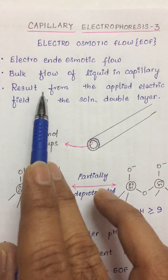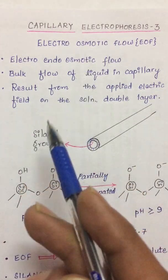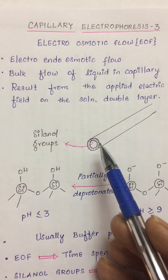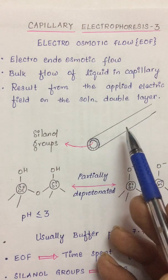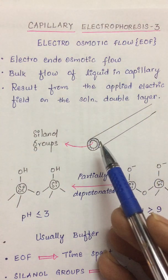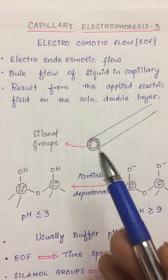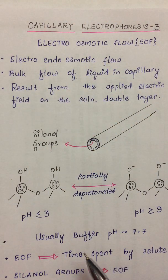EOF is described as a bulk flow of the liquid within the given capillary, resulting from the applied electric field on the solution double layer at the capillary wall. Whatever components are present within the analyte, they will spend some time within this capillary, and how much time they spend is dictated by the electro osmotic flow. In turn, the electro osmotic flow is controlled by the silanol groups.